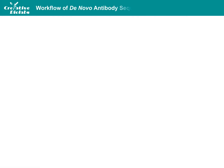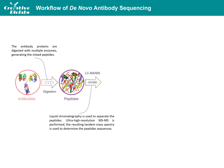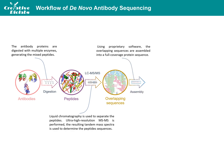A typical workflow of de novo antibody sequencing mainly consists of four processes. First, the antibody proteins are digested using an optimized set of orthogonal enzymes with diverse cleavage sites, generating mixed peptides. Chromatography is then used to separate the peptides. Ultra high resolution mass spectrometry tandem to the chromatography is performed to determine the peptide sequence de novo from tandem mass spectra. Using proprietary software, the overlapping sequences are assembled into a full-coverage protein sequence.